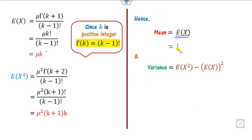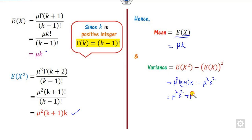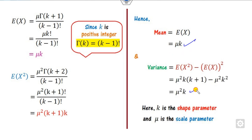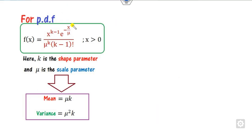So therefore, the mean E[X] is mu*K, and for E[X²] you substitute the value to get mu²*K*(K+1). Opening the bracket and simplifying, the variance is E[X²] - (E[X])² = mu²*K. So the mean is mu*K and the variance is mu²*K, where K is the shape parameter and mu is the scale parameter.